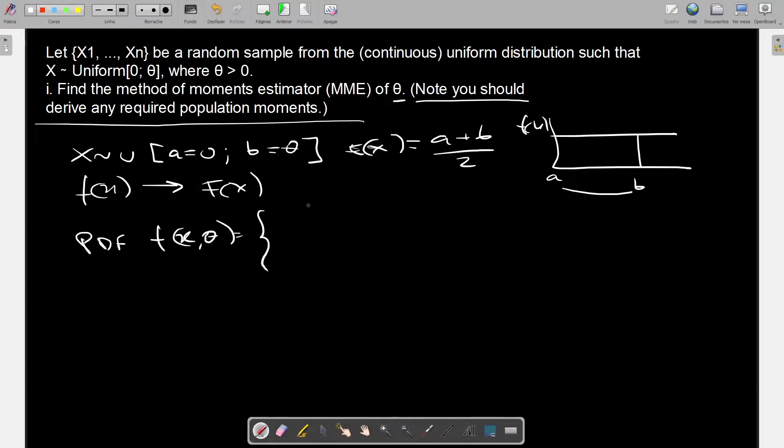And we know that the PDF of the function is f of x equals, we have the system, 1 divided by b minus a, and x varies between 0 and theta. So when we are starting out and getting it from f of x to big F of x,